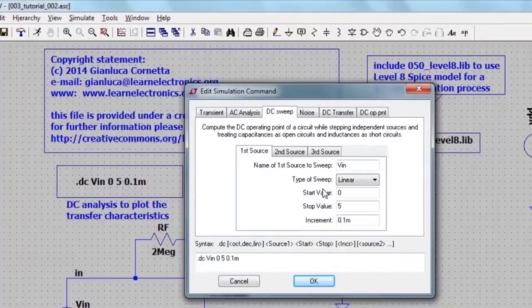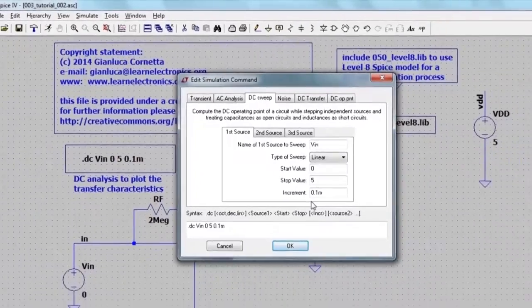In this case, I choose a linear sweep, the start voltage, the end voltage, and the increment. That is 0.1 millivolts.